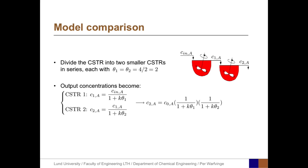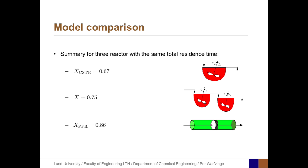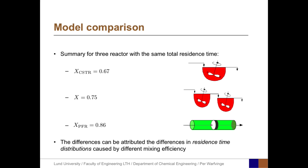Combining these two equations, C2A equals the input concentration of A times the two parentheses shown. We can express the conversion as 1 minus the output concentration divided by the input concentration, which equals 1 minus the product of the two parentheses. With numbers, X equals 0.75. Going back to the ideal reactors, the CSTR gave 67%, tanks in series gave 75%, and the plug flow reactor gave 0.86. These differences can be attributed to differences in residence time distributions caused by different mixing efficiencies.